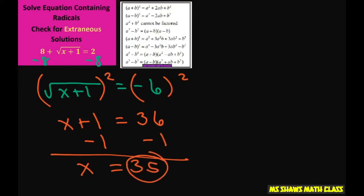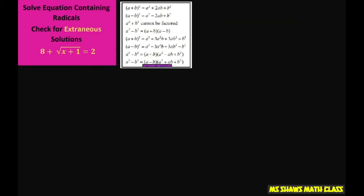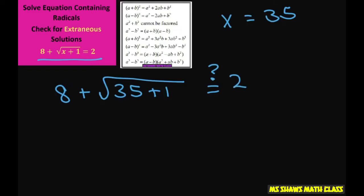Now let's check and see if that works. We have x equals 35. So we take our original equation: 8 plus, x was 35, so we have 8 plus square root of 35 plus 1. Does that equal 2? 8 plus square root of 36, does that equal 2?